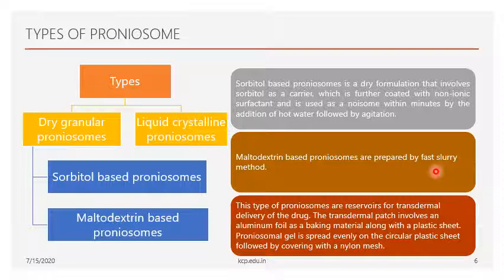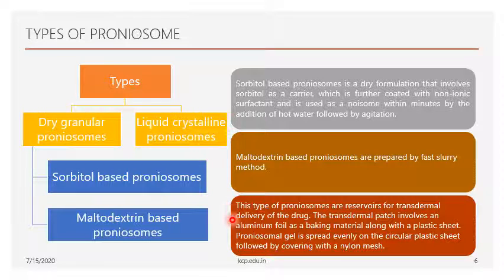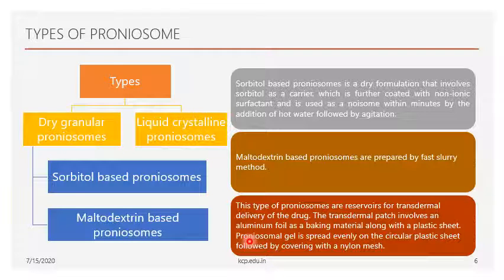The second type is liquid crystalline proniosomes, which are especially used for transdermal delivery of drugs. In transdermal patches, it involves an aluminium foil and backing material along with plastic sheets. The proniosomes are in the form of a gel, which is loaded into the reservoir of the transdermal patch, from which the drug is delivered to the body.